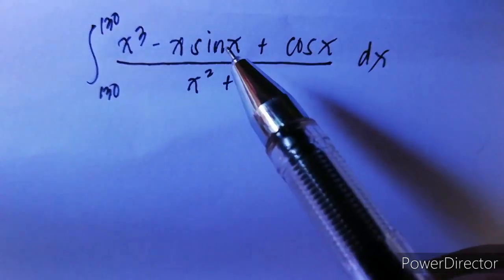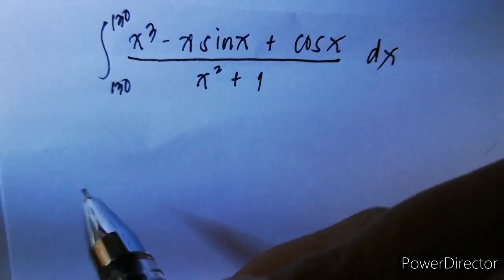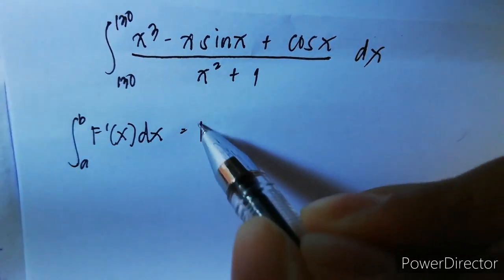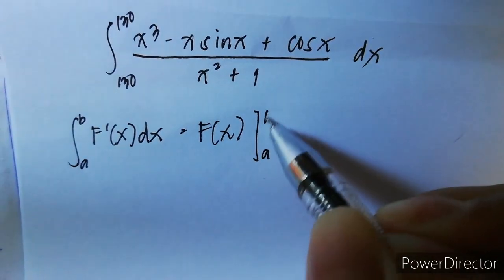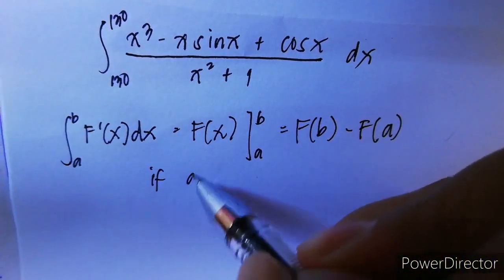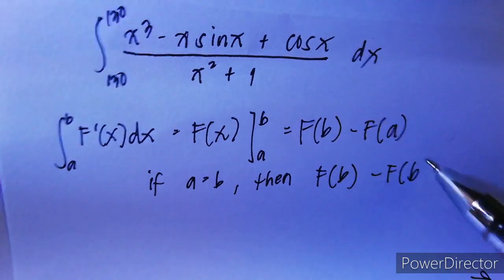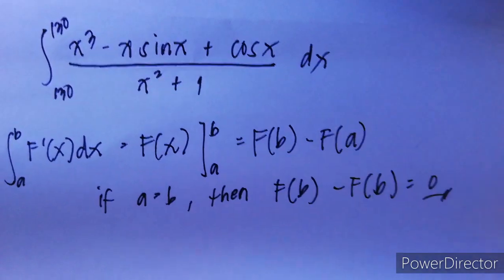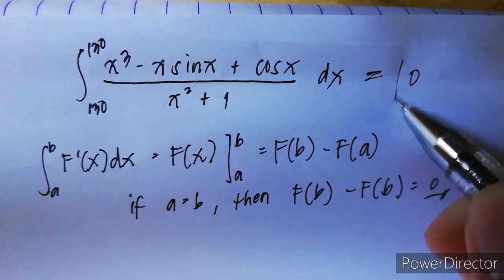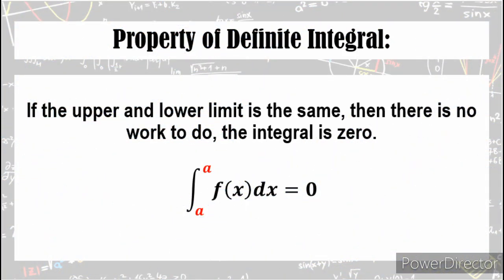For our next problem, we have the integral of x cubed minus x sine x plus 2 sine x over x squared plus 1 dx, with limits from 130 to 130. Remember that the definite integral from a to b equals f(b) minus f(a). In our example, the upper and lower limits are the same. If a equals b, then f(b) minus f(b) equals zero. So no matter how complicated the integrand is, the answer is simply 0.